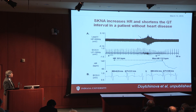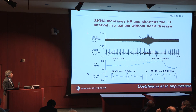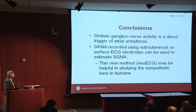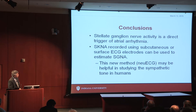As a preliminary result, we have done this in human patients. One patient with no known heart disease was admitted to a video monitoring unit for epilepsy study. Using high-frequency, high-bandwidth recording on channel two, we can see elevation of heart rate and shortening of the QT interval. We will have more data at the HRS meeting this year. In conclusion, stellate ganglion nerve activity is a direct trigger of atrial arrhythmia; skin nerve activity and subcutaneous nerve activity recorded using subcutaneous surface ECG electrodes can estimate SGNA, and this new ECG method may be helpful in studying sympathetic tone in humans.